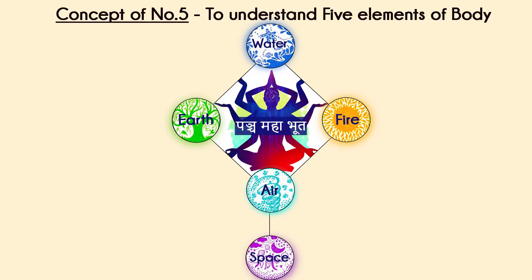Then five — the five elements: earth, which we have as bones and minerals; water, about 70 percent of the body; fire; air, as pressures and movement inside; and space. So five elements. And then six — these five elements combined with the soul, because these five alone are inert, but when you add the soul, they become alive.